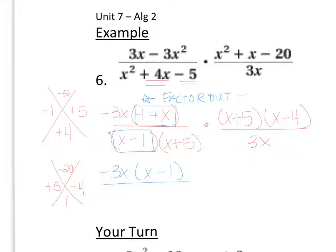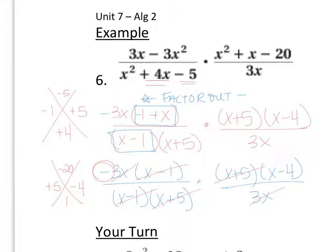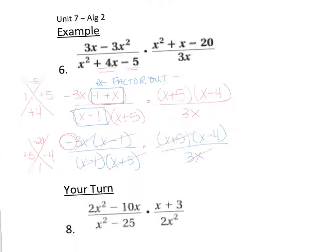And it's still over (x - 1)(x + 5) multiplied by (x + 5)(x - 4) all over 3x. Now, let's simplify. Let's cross out. x minus 1s go away, x plus 5s go away, 3x goes away. I still have that negative on the outside, so that's fine, but let's see what I'm left with.